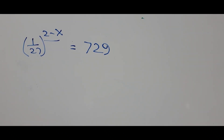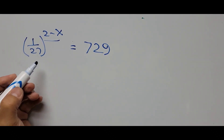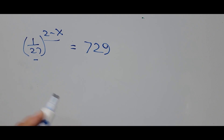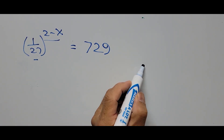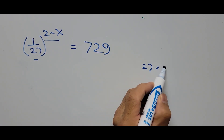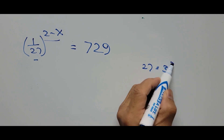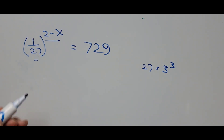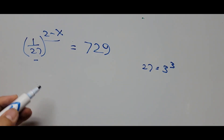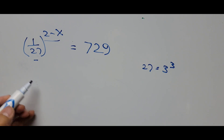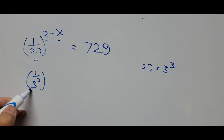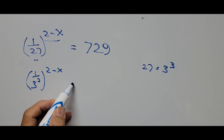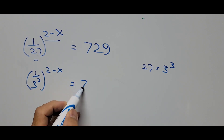Now we focus our attention on the base. On the left side of the equation we have 1 over 27, and the number 27 can be written the same way as 3 raised to the third power. So we use that instead. The equation now becomes 1 over 3 raised to the third power, raised to the power 2 minus x, equals 729.